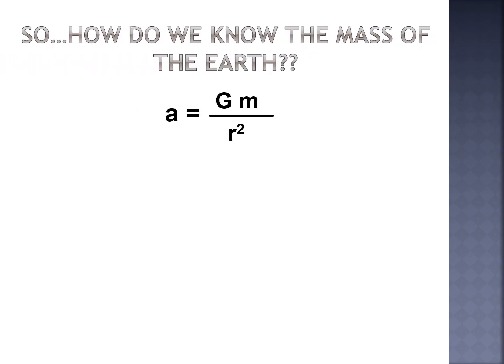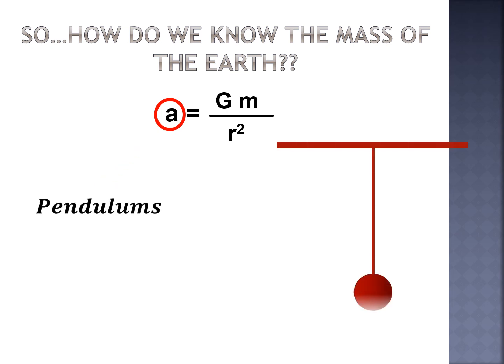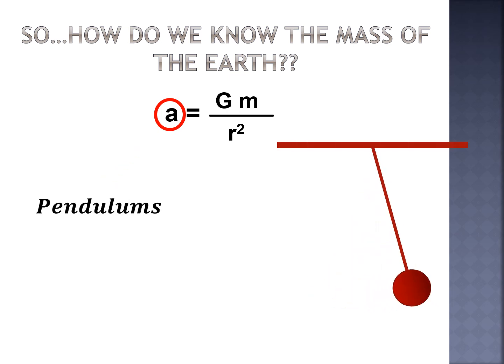Here we have our acceleration equation where acceleration is equal to the gravitational constant times the mass divided by the radius squared. We're going to use this equation to figure out the mass of the Earth, which means we have to figure out every other part of this equation. The first thing we do is figure out the acceleration — we're going to use pendulums to figure out the acceleration due to gravity.